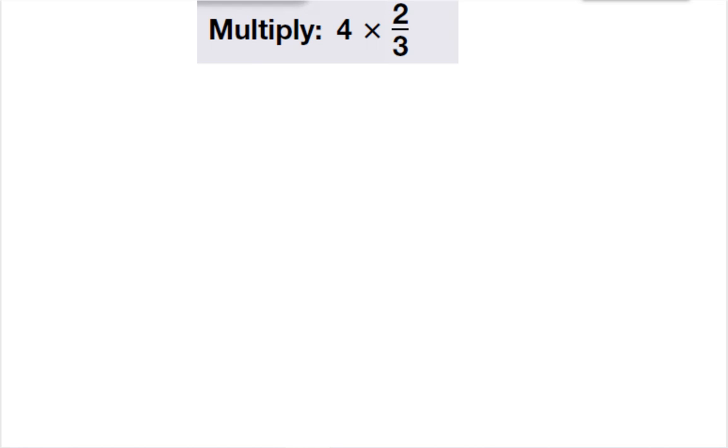On this one, it asks us to multiply four times two-thirds. The number four is a whole number, and I can change any whole number into a fraction by putting it over the number one. So four over one times two-thirds, we multiply like normal. Four times two is eight, one times three is three. So my answer is eight-thirds.